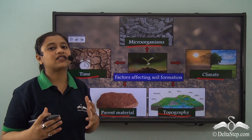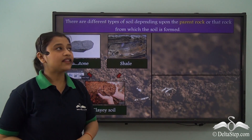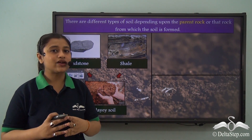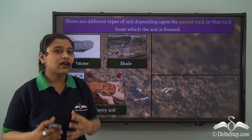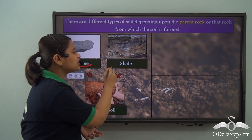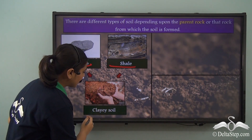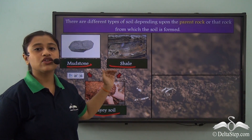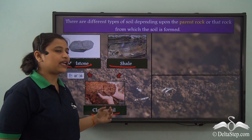Let's learn how each factor influences soil formation in detail. Starting with the first factor — the parent rock. Pottery making requires clayey soil. Mudstone and shale, after weathering and erosion, lead to the formation of clayey soil. Therefore, mudstone and shale are the parent rocks of the clayey soil.